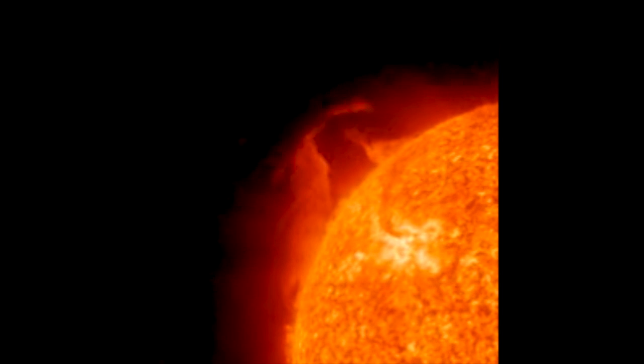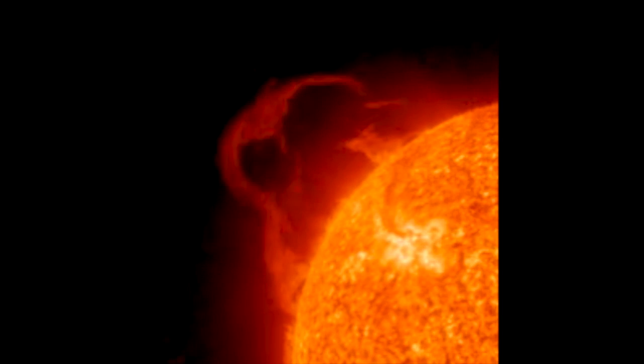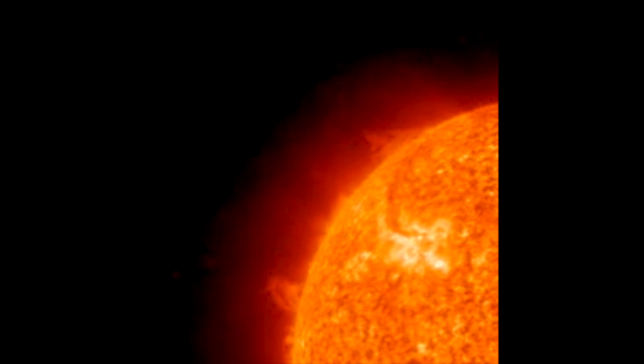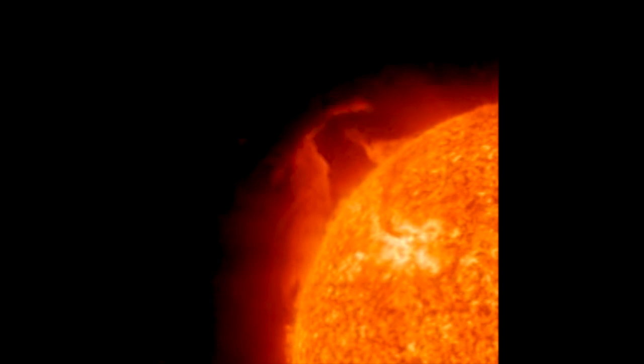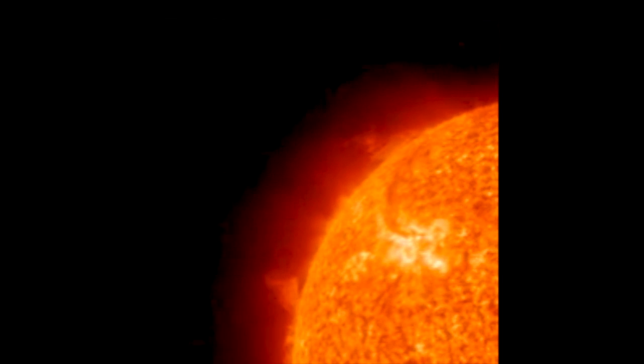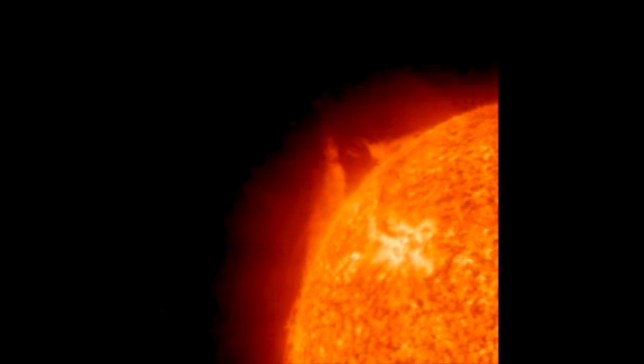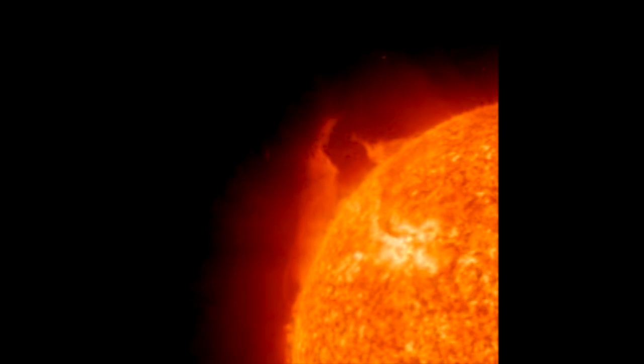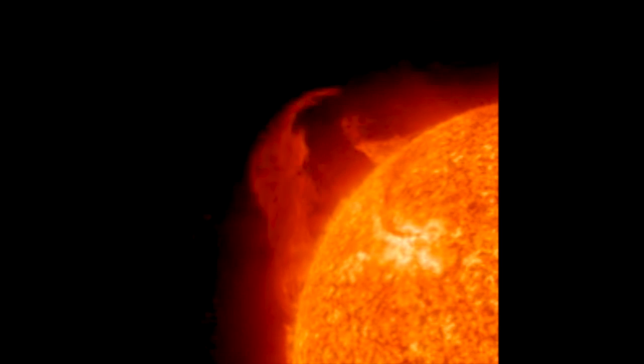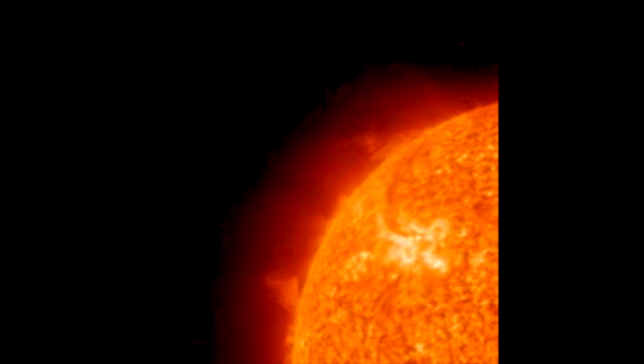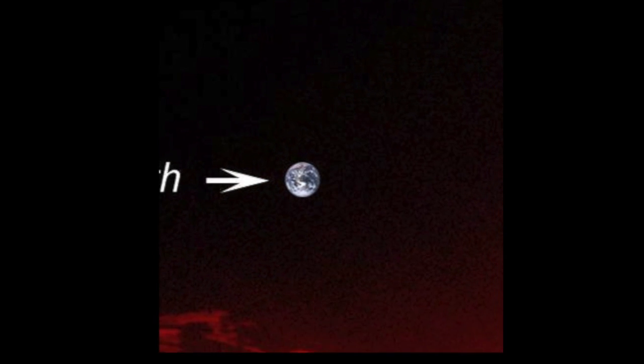Prominences are anchored to the sun's surface in the photosphere and extend outwards into the sun's hot outer atmosphere, called the corona. A prominence forms over timescales of about a day, and stable prominences may persist in the corona for several months, looping hundreds of thousands of miles into space.